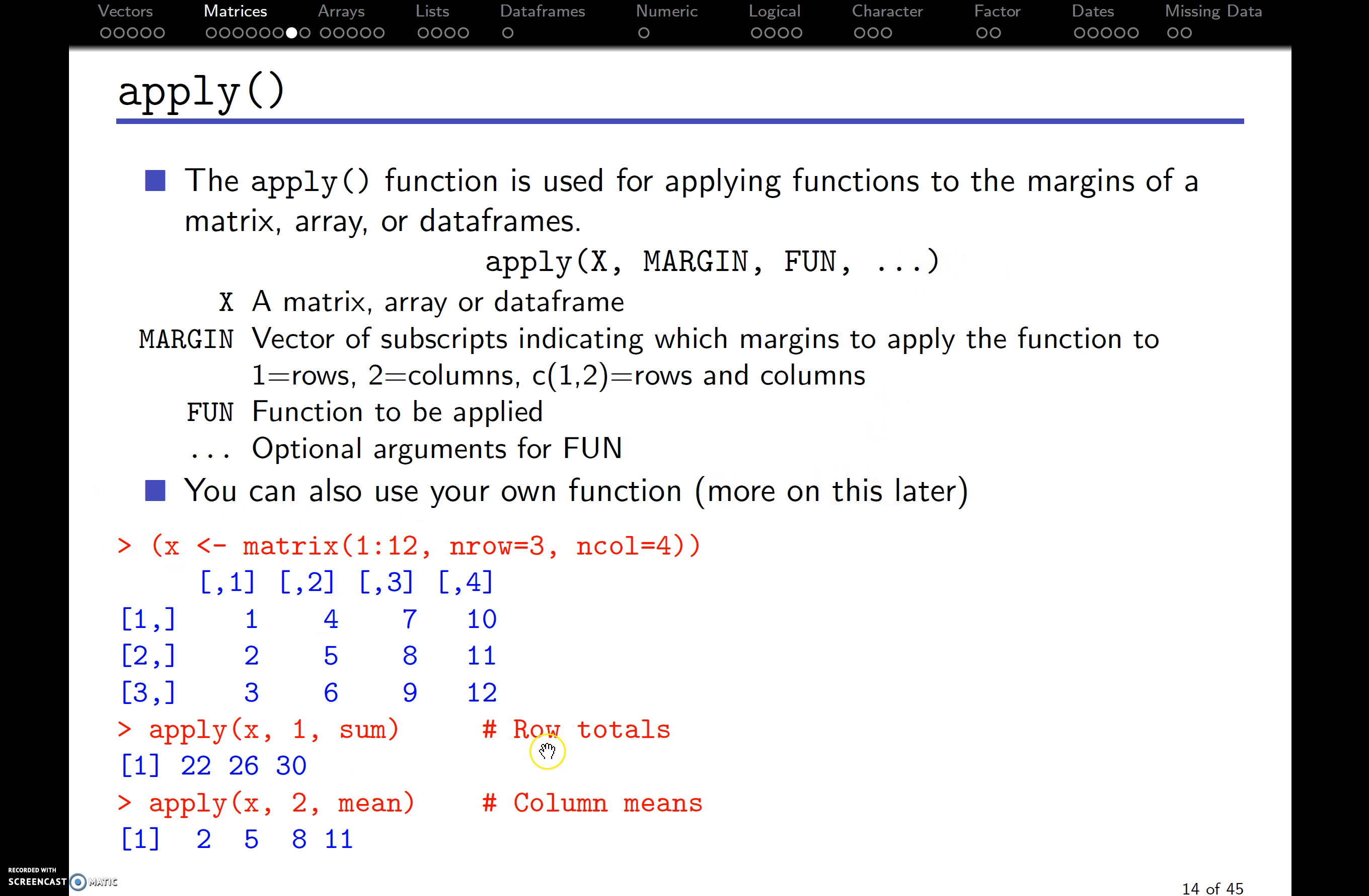Okay, so for example, here we have a matrix. One, two, three, four, five, six, on up to 12. If we use apply X, one, so one means across rows, sum, we get 22, 26, 30. So let's think back. What does that mean? Well, let's add up these. So, one across row number one. One plus four plus seven plus 10, we get 22. Two plus five plus eight plus 11, you get 26. And so forth. Last row, row three, you get 30.